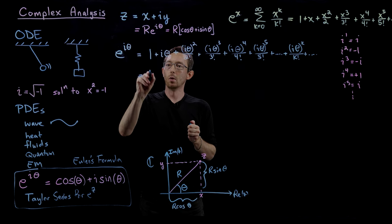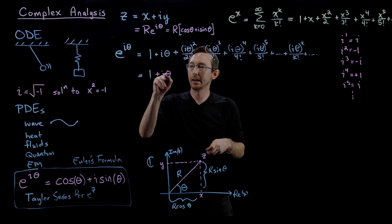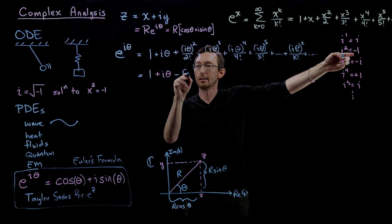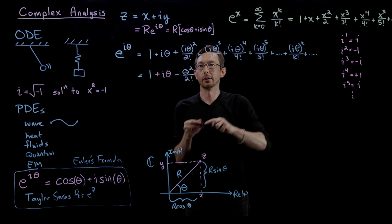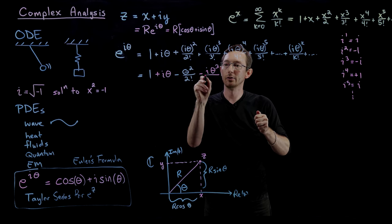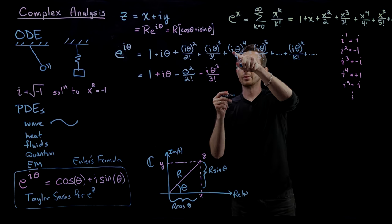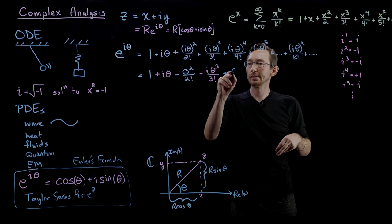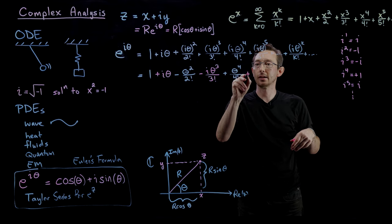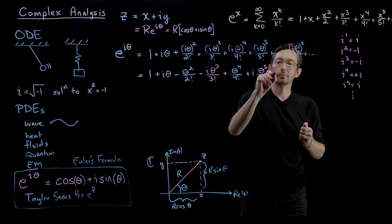Working through each term: i squared gives minus theta squared over two factorial; i cubed gives minus i theta cubed over three factorial; i to the fourth gives plus theta to the fourth over four factorial; i to the fifth gives plus i theta to the fifth over five factorial — the blue terms are real and the pink terms are imaginary.